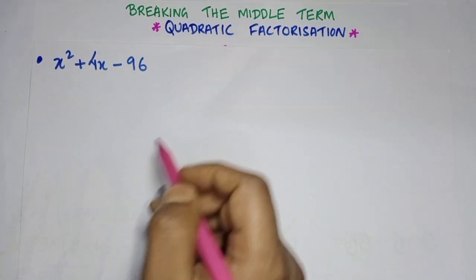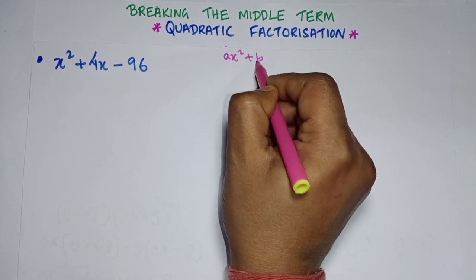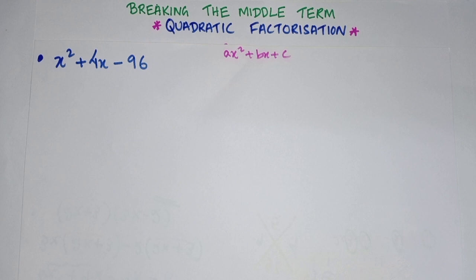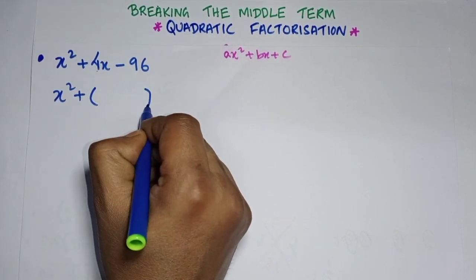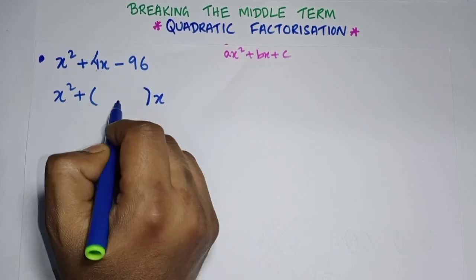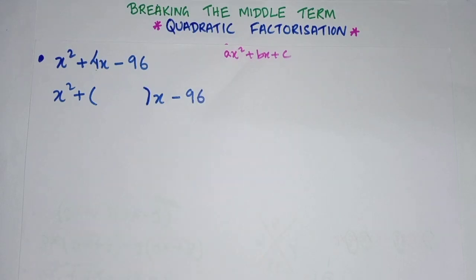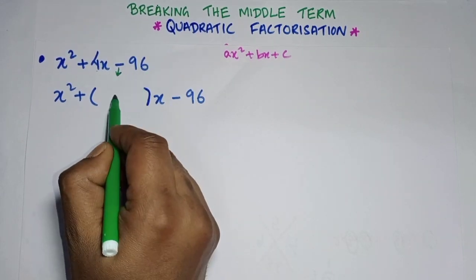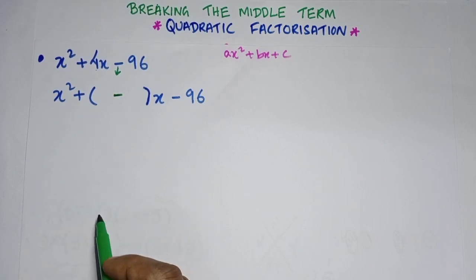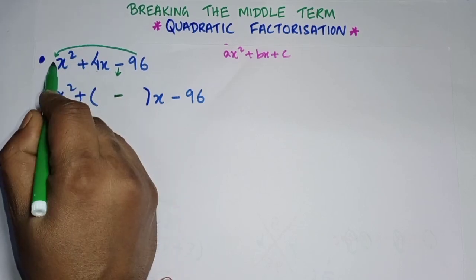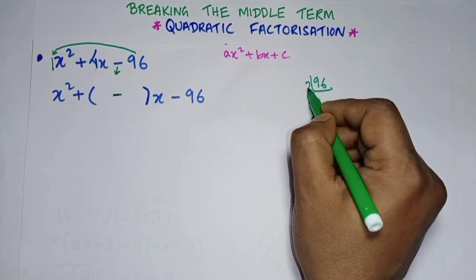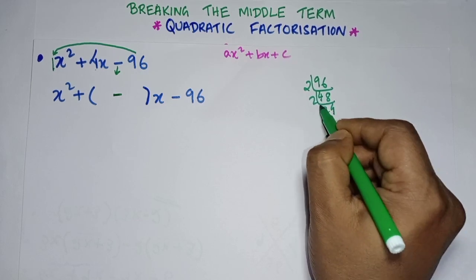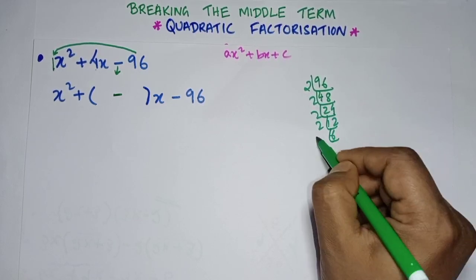Let's try another question in the form ax² + bx + c. We write x² plus, break the 4, then x minus 96. Since the sign in the middle is minus, the bracket carries minus. Nothing is in front, so we multiply 1 × 96 = 96. We find the LCM of 96: 2×4=8, 2×8=16, 2×2=4, 2×4=8, 2×1=2, 2×2=2, 2×6=12, 3×3=9.